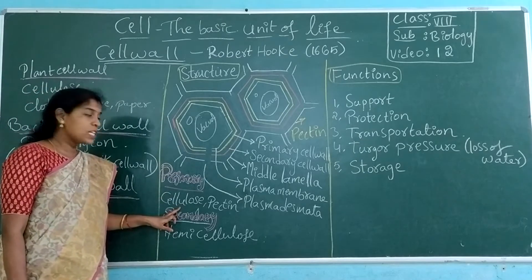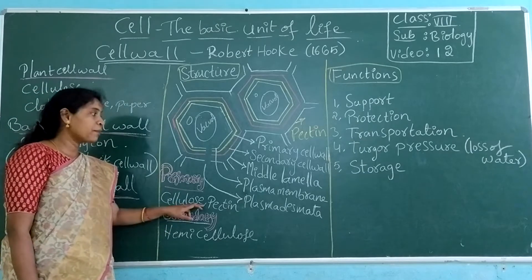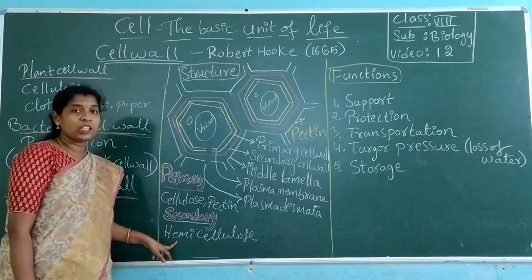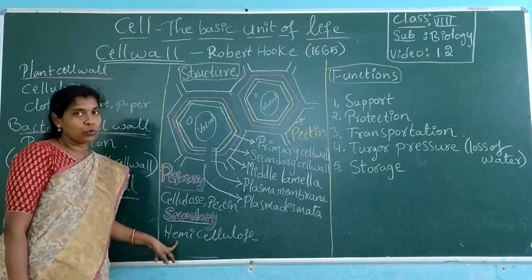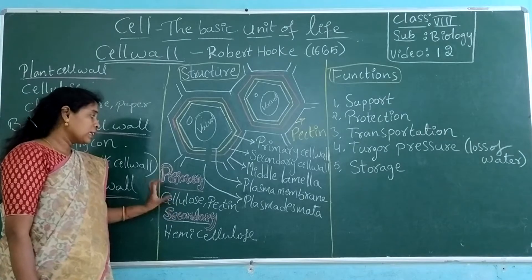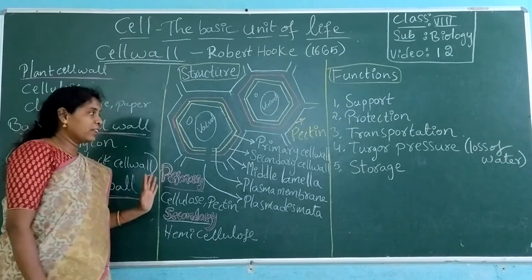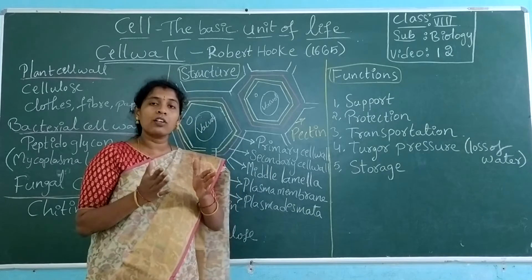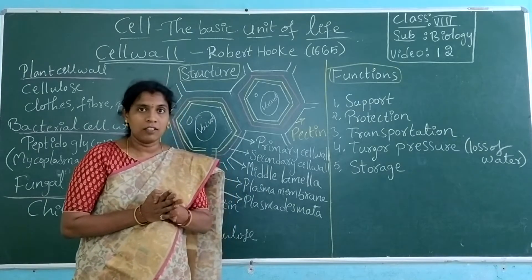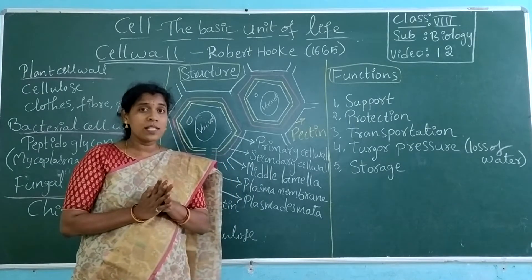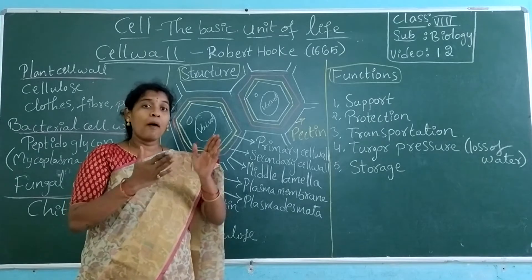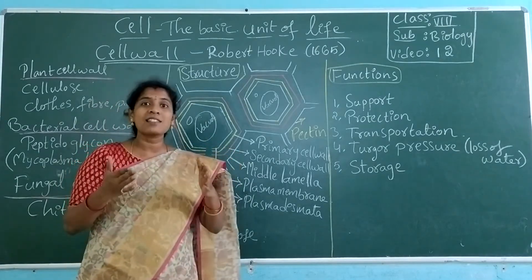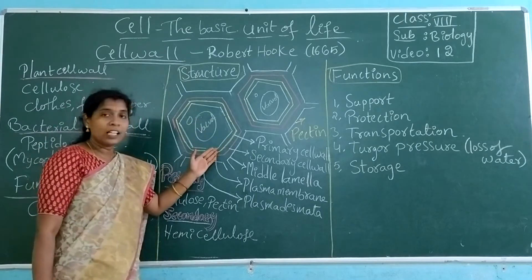The primary cell wall is made up of cellulose and pectin. The secondary cell wall is also made up of cellulose. These cellulose and pectin give structure and support to the cell. Cellulose is a complex sugar, so these complex sugar layers are rigid and strong and provide support to the cell.